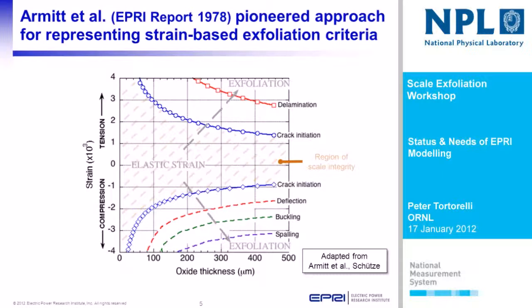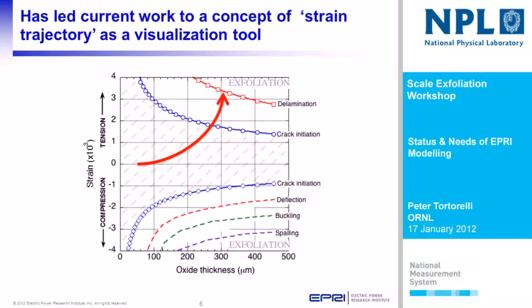Some of these failure modes are the ones that Michael Schutzer has recently elaborated on in his work on scale failure and effective defects. We are using a concept of strain trajectory — we calculate strain as a function of time as the oxide grows, and we map that onto this type of modified Almet diagram to track the time or the oxide thickness to where we pass one of these failure lines.